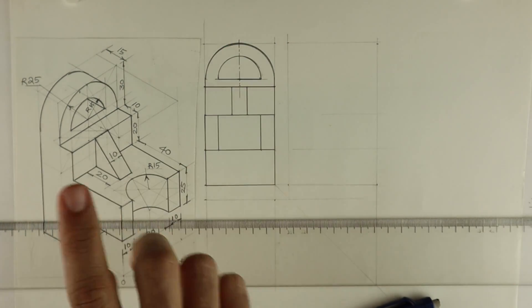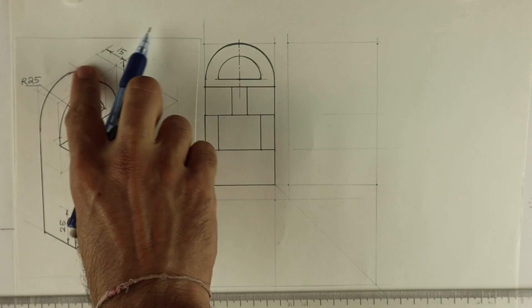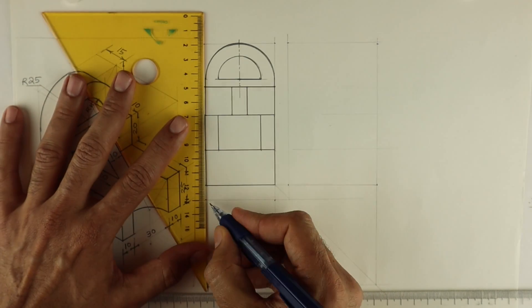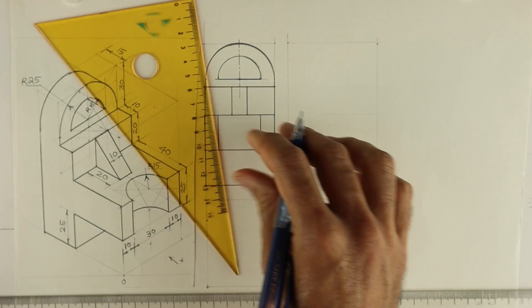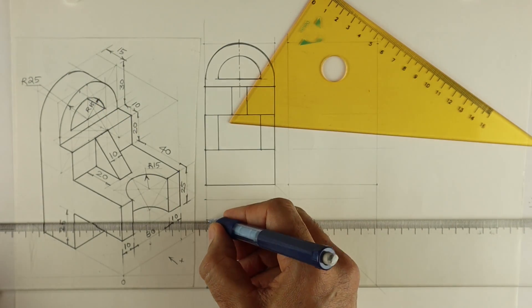Now we can draw top view. In top view we will see this part, 15, which will be rectangle. Always remember, circle in one view, other two views will be same.